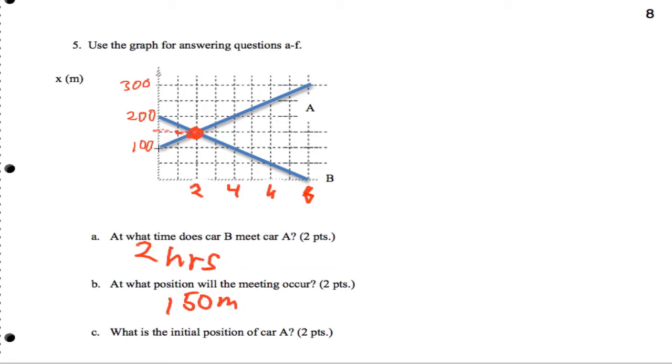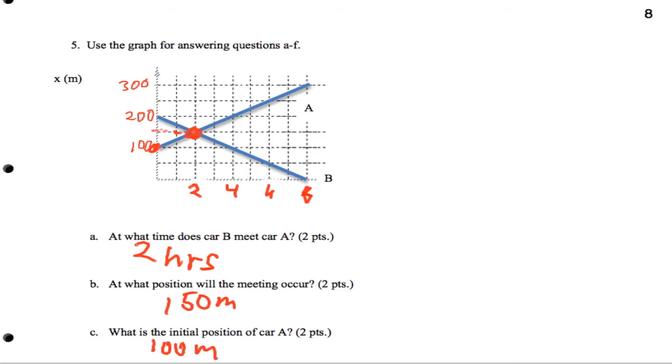What is the initial position of car A? Car A starts off at 100 meters—sorry, 100 miles along the road.